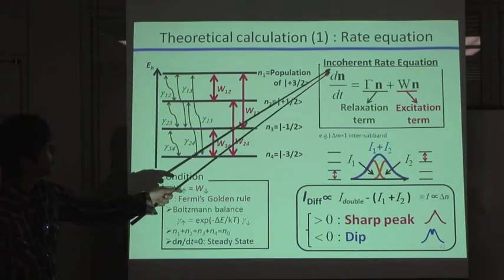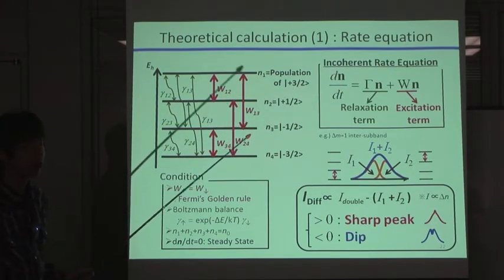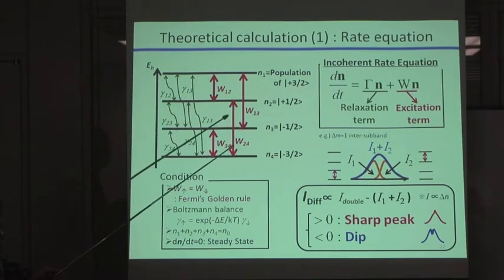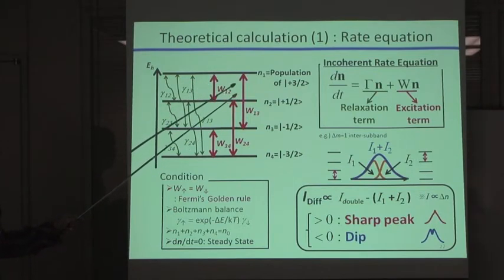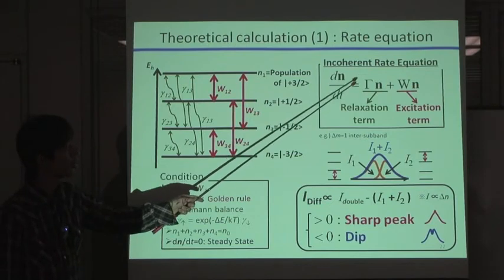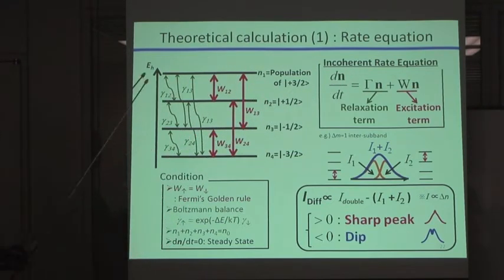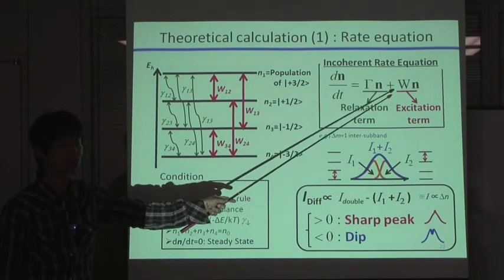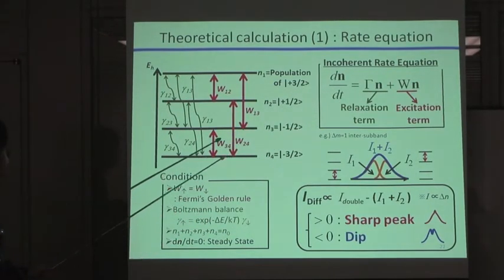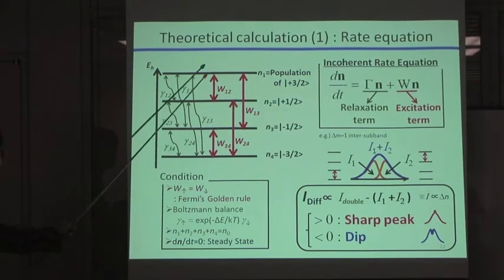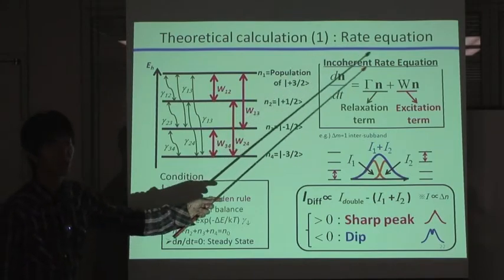A vector n is a population vector whose components are the population of each level. And gamma is a relaxation matrix whose components are the relaxation rate. And W is an excitation matrix whose components are the excitation rate, like this.